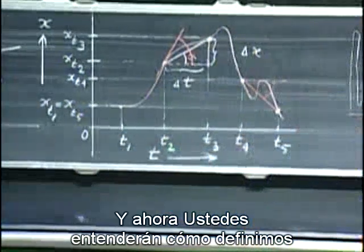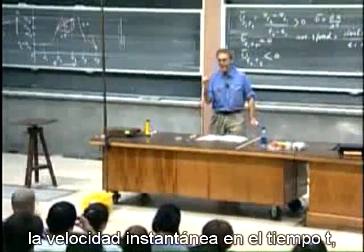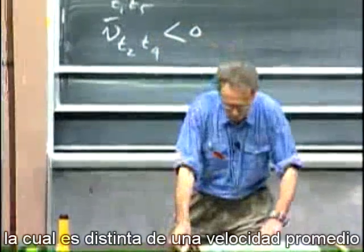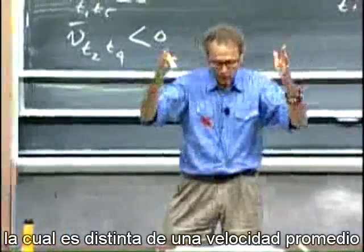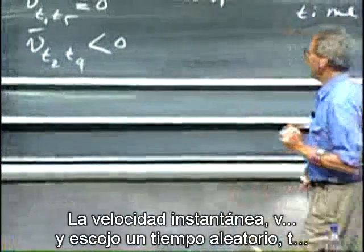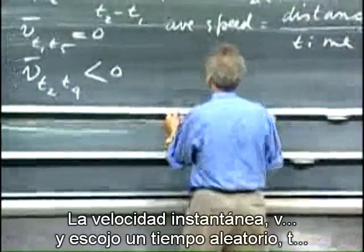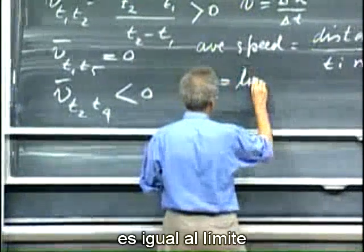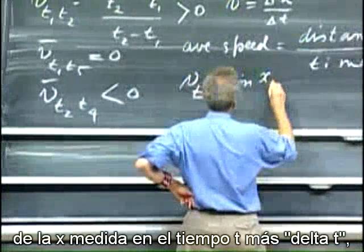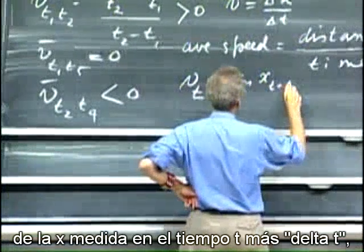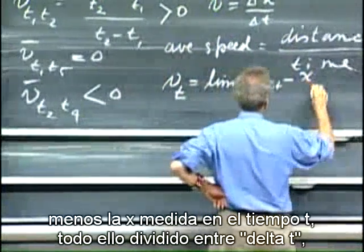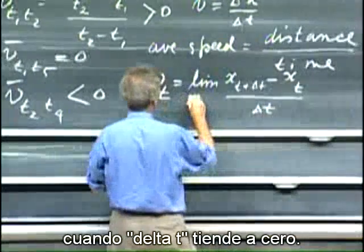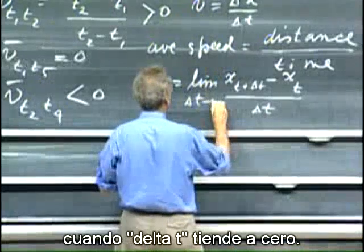And now you will understand how we define the instantaneous velocity at time t, which is different from an average velocity between two time intervals. The instantaneous velocity, v, and I pick a random time t, equals the limiting case for x measured at time t plus delta t minus x measured at time t divided by delta t. And I do that for delta t goes to zero.